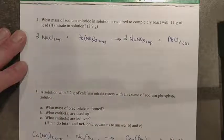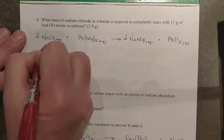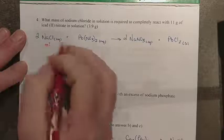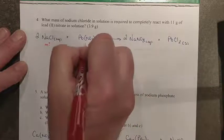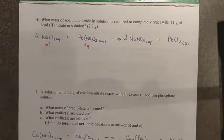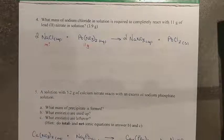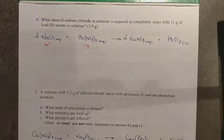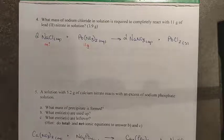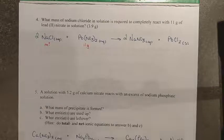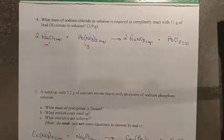I now need to organize my information and it says what mass of sodium chloride solution, so I'm looking for a mass, is required to completely react with 11 grams of my lead nitrate solution. So now I have my starting point. I've been given 11 grams. There's a couple of different ways you can spin this.